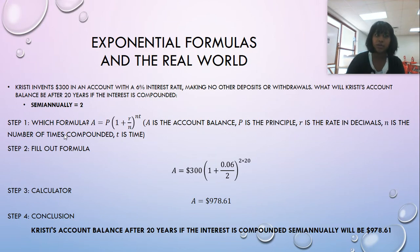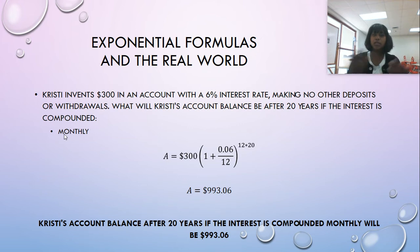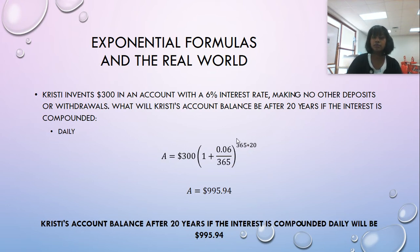So let's try the other ones, daily and monthly. So here we've got monthly. Same information. The only thing that changed was this number from 2 to 12. What about daily? Again, the only number that changed was this number from 2 to 12 to 365, semi-annually to monthly to daily.